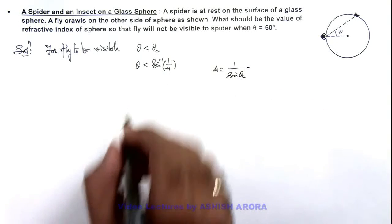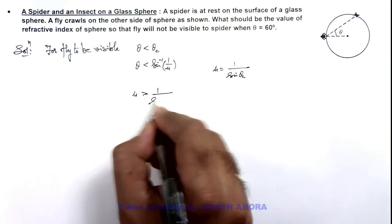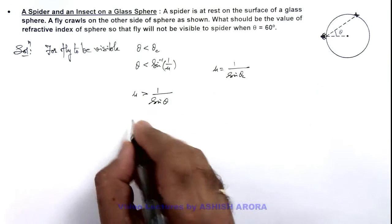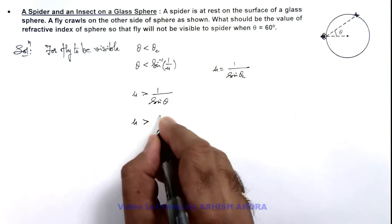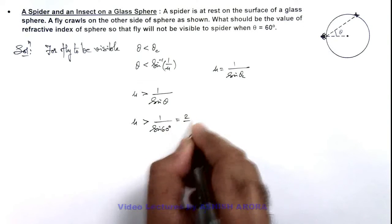Here we can write the value of μ should be greater than 1 by sine 60 degrees, which is equal to 2 by root 3.